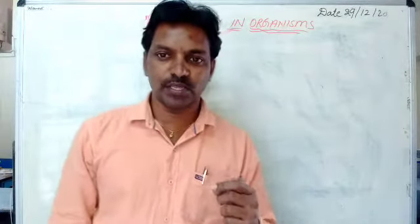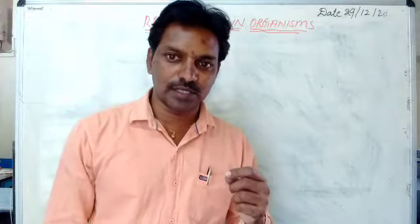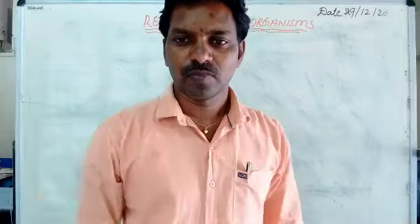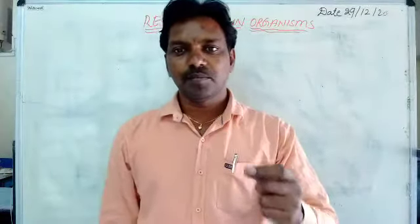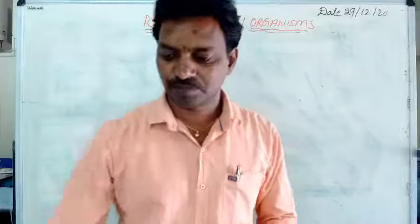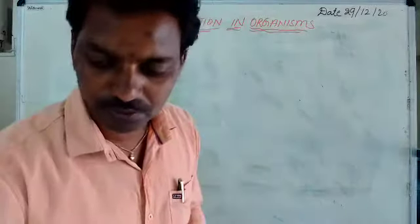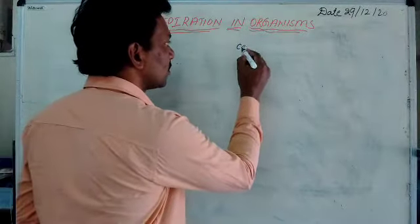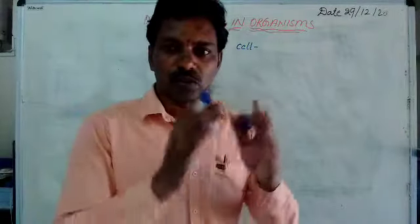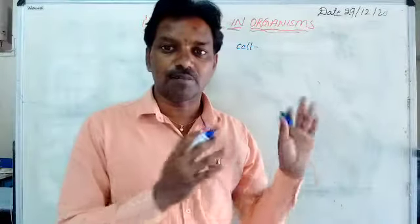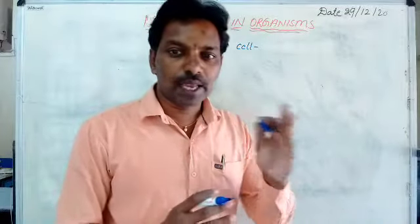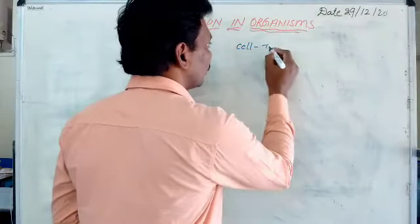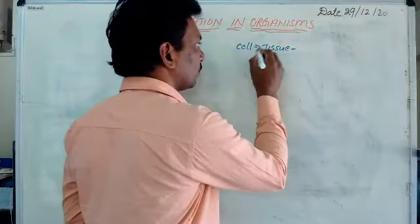First, let us know what is a cell, what is an organ, what is an organ system, and what is an organism. All living beings are made up of cells. Cell is the basic unit of life. A group of cells with a similar function is known as tissue.